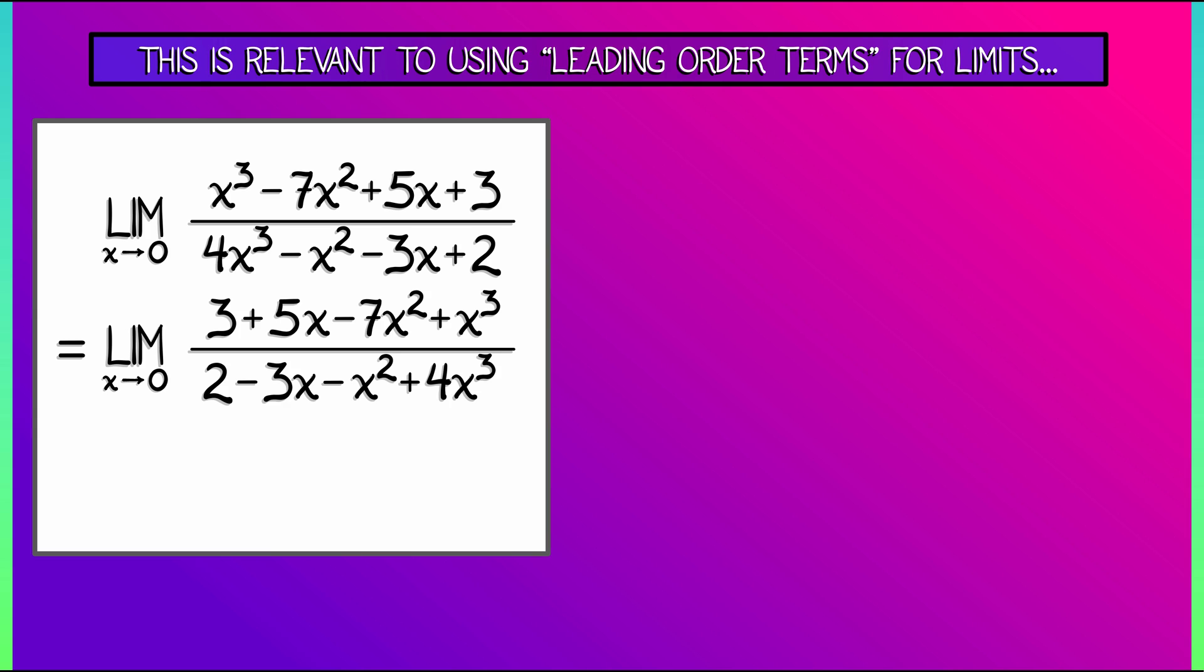And I can easily see that all the higher order terms are going to zero, albeit at different rates. In the end, what matters is the leading order terms, 3 up top, 2 below, leading to a final answer of 3 halves.